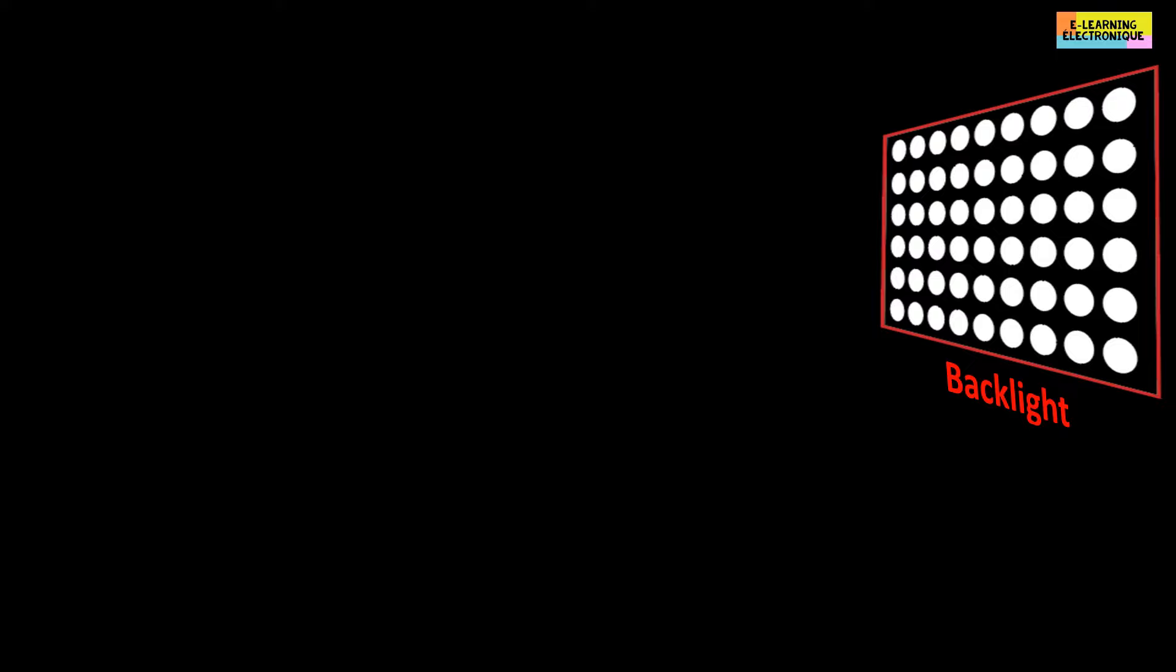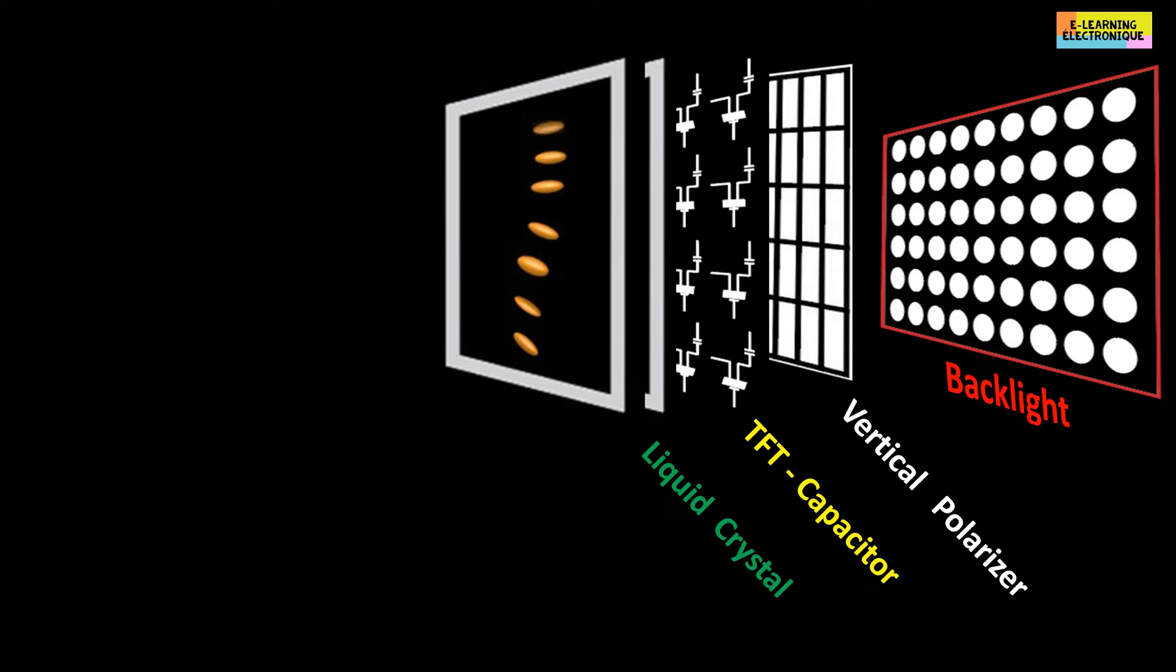Starting from the back of the screen to the front we find a first vertical light polarizer. Then a conductive layer containing the TFT transistors and capacitors is deposited on a first thin glass plate. A first layer of an insulating material whose surface has been grooved. A layer of liquid crystal trapped between the two glass plates.